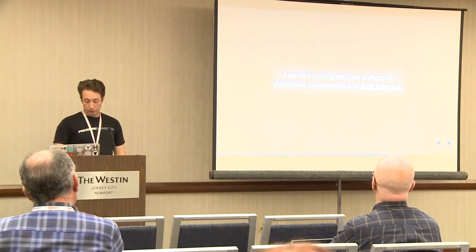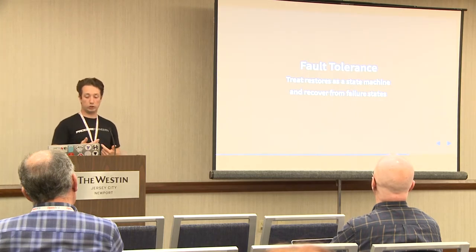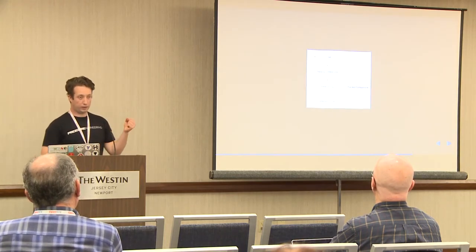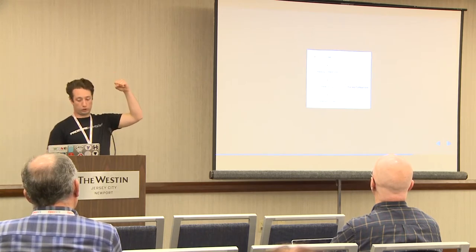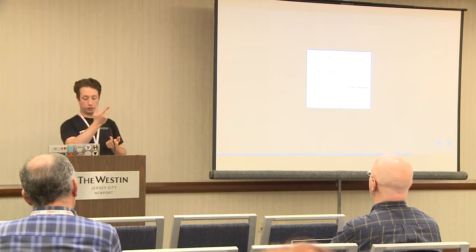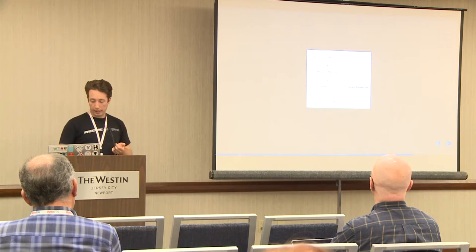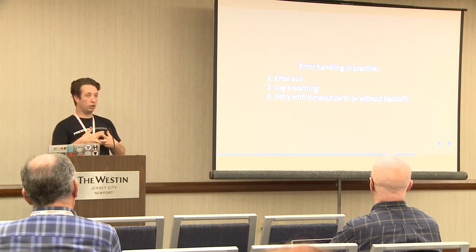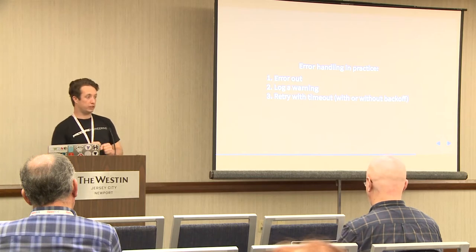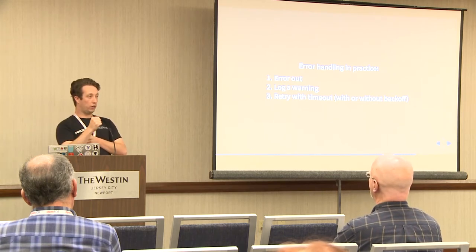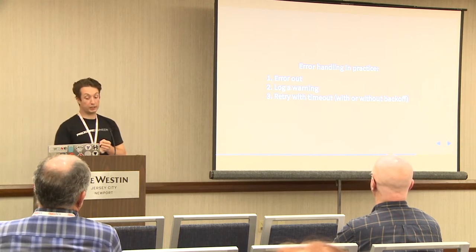For fault tolerance, the idea was to treat restore as a state machine and recover from failure states. The state diagram has databases going: In Use → Ready to Restore → Restoring → Ready for Use → back to In Use. The failure state is going from Restoring to Failed to Restore, and we want to bring it back to Restoring. Writing Go code the way Go wants you to write it allowed this to happen very easily by just handling errors as they come — going through these different states, you can easily see within Go what errors can occur and handle them properly.